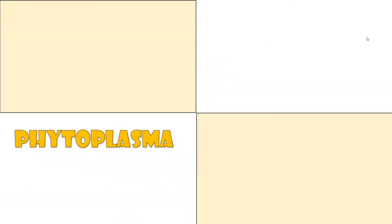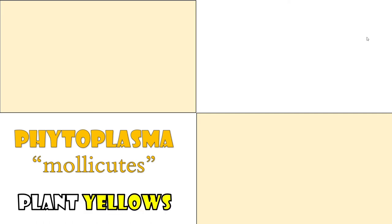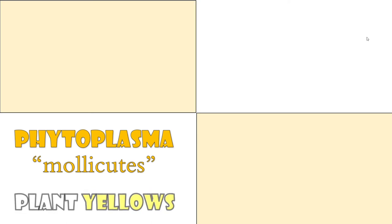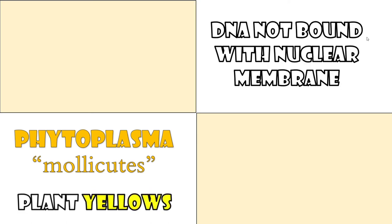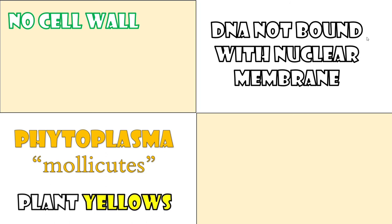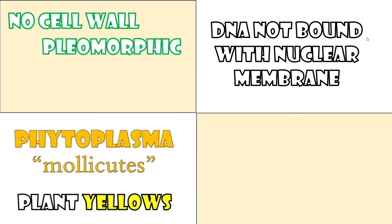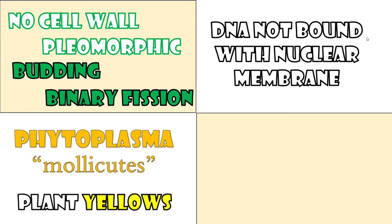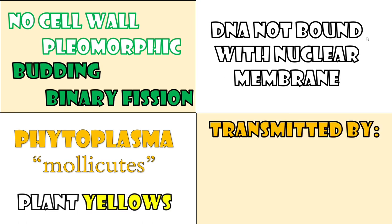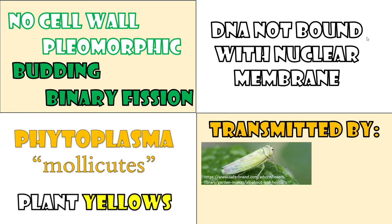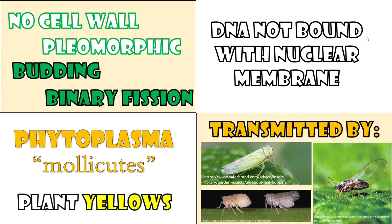Phytoplasma or mollicutes: Diseases caused by these organisms are commonly known as plant yellows because the common damage symptom is chlorosis of foliage. Their DNA is not bound with a nuclear membrane. They lack a cell wall, resulting in a pleomorphic form or variable shape. They reproduce by budding and binary fission, and are usually transmitted by leafhoppers, psyllids, and planthoppers.